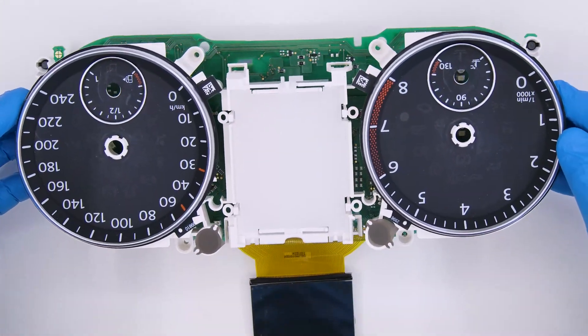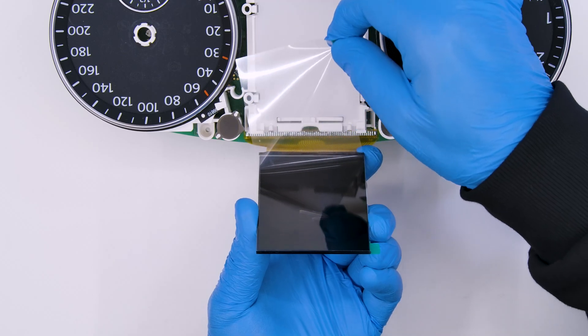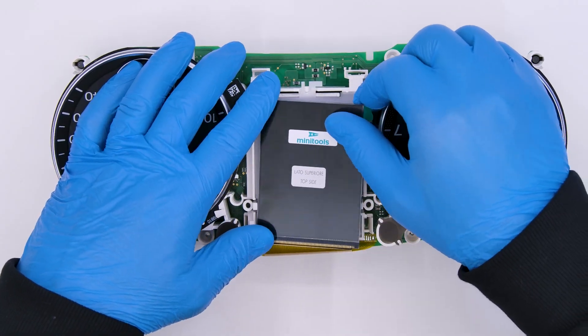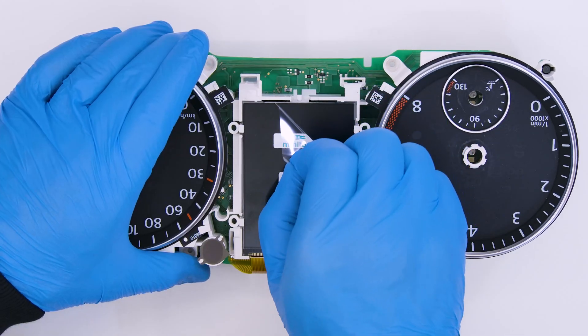Attach the base with the gauge spacers on the board. Peel off the rear protective film from the Minitools LCD and fit it in its housing, securing it. Remove the front film as well.